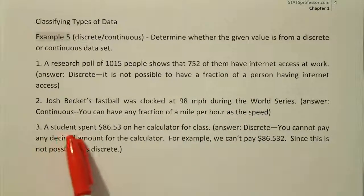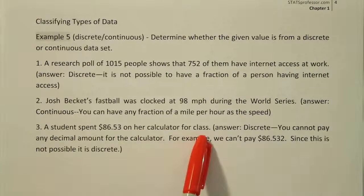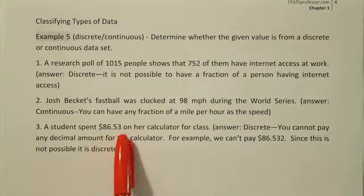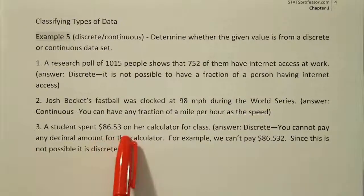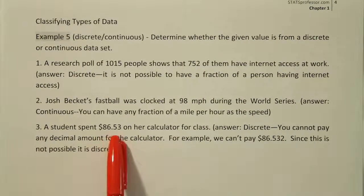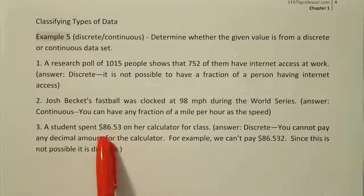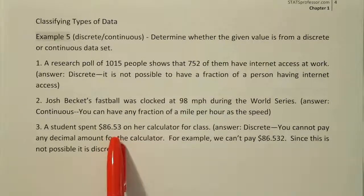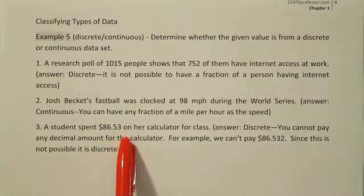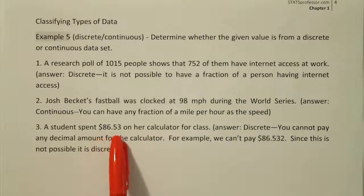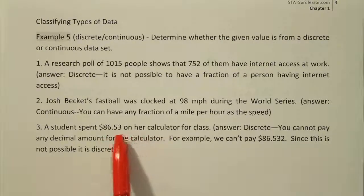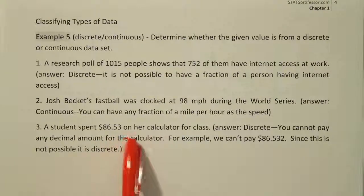Let's look at number three: a student spent $86.53 on her calculator for class. A lot of people look at this number and think it's continuous because it has decimals. But I would say this is kind of a gray area problem. You could argue it's discrete because either you spend $86.53 or $86.54, but you certainly couldn't pay $86.53 and two-tenths of a penny. I'm not able to pay two-tenths of a penny in hard currency, so I'm limited to paying to the nearest penny — meaning there are little tiny gaps.